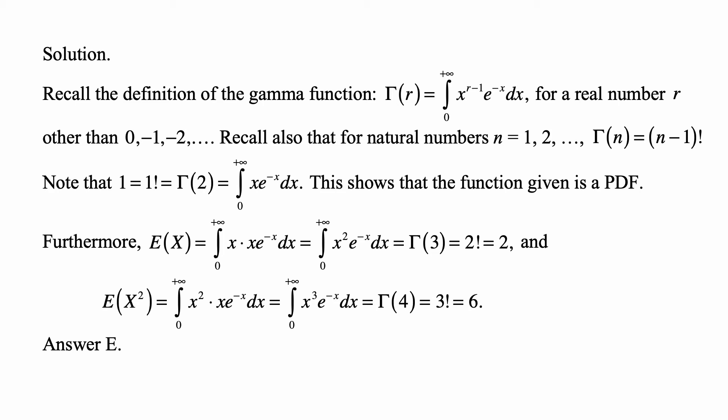And note that 1 factorial, or 1, is gamma of 2. This shows that the function given is a PDF. And E(X) is equal to the integral from 0 to plus infinity of x times x e to the minus x dx. So it's the integral from 0 to plus infinity of x squared e to the minus x dx. That's gamma of 3, and that's 2 factorial, so it's 2.